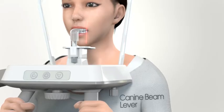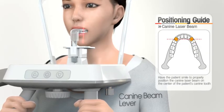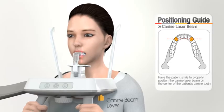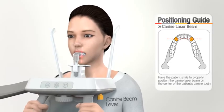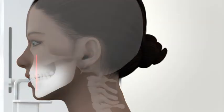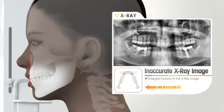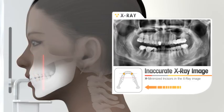Match the canine laser beam at the center of the patient's canine teeth by adjusting the canine beam lever. If the location of the canine beam is off the patient's canine position, the incisor image can be incorrectly magnified — meaning reduced or enlarged incisor images are achieved by incorrect capture layer.